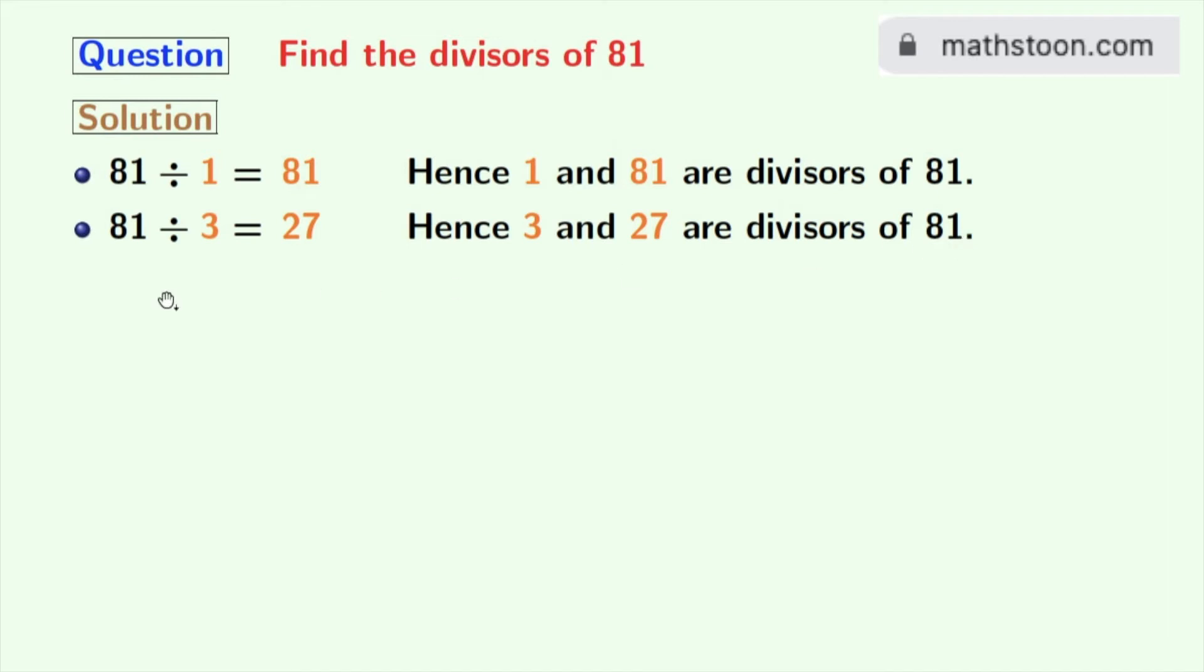The next number which divides 81 is 9. And dividing 81 with 9, we get 9. So 9 is the divisor of 81.